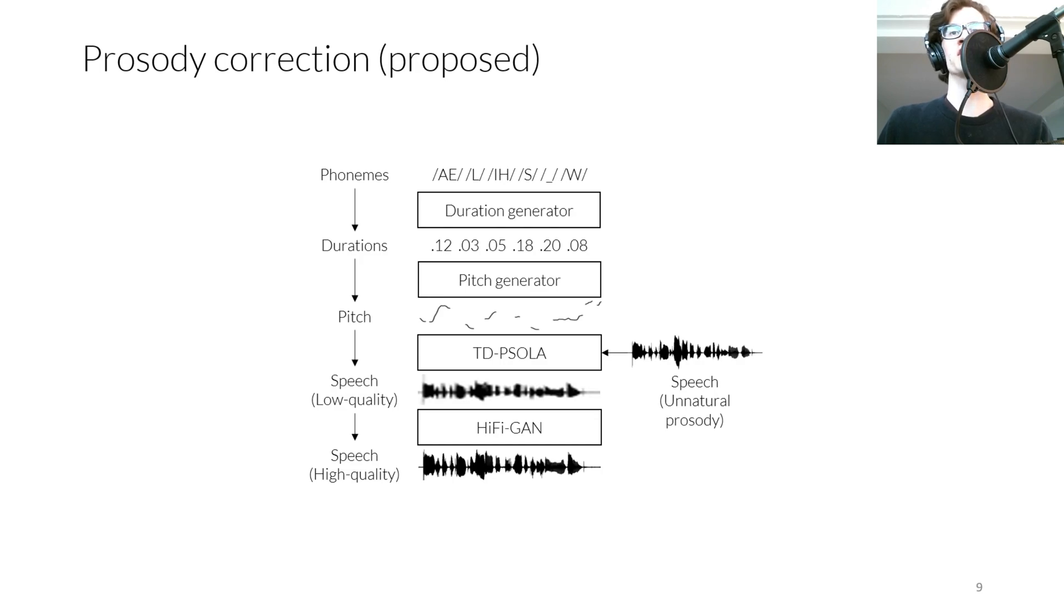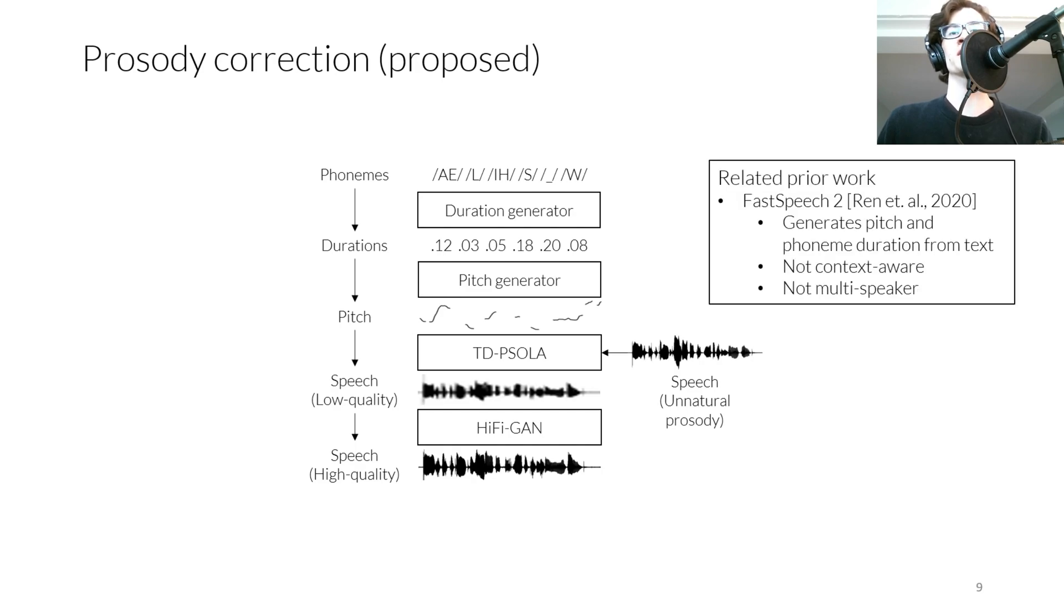Of these four, only the duration generator is unique to this work. Our contributions are the duration generator and the composition of these components for the task of prosody correction. The closest prior work to our prosody correction system is Fast Speech 2, which is a neural TTS system that explicitly generates pitch and phoneme durations from text. However, Fast Speech 2 lacks context awareness, and generalizing to multiple speakers is more difficult with Fast Speech 2.